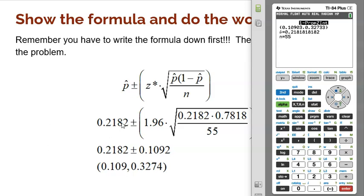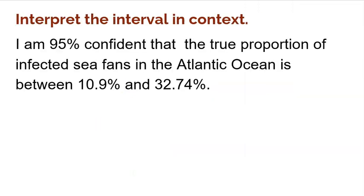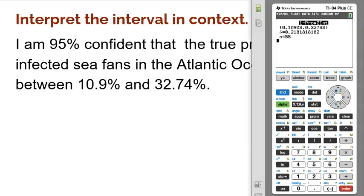And that's really it. But don't forget, on an FRQ you need to interpret that interval. I'm 95% confident the true proportion of infected sea fans is somewhere between 10.9% and 32.74%. But think about a multiple choice where all you have to do is build the interval. Look how simple that is.